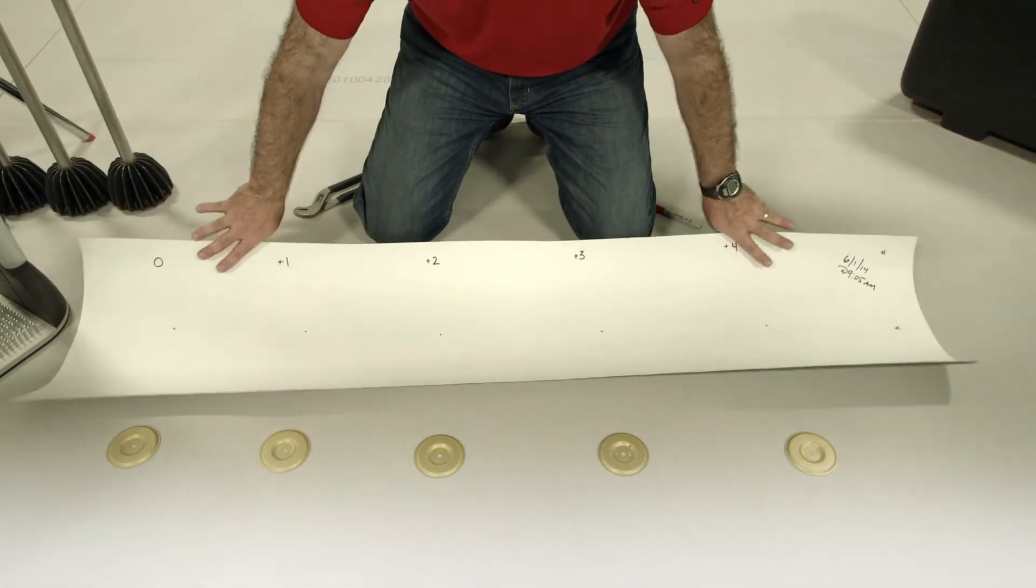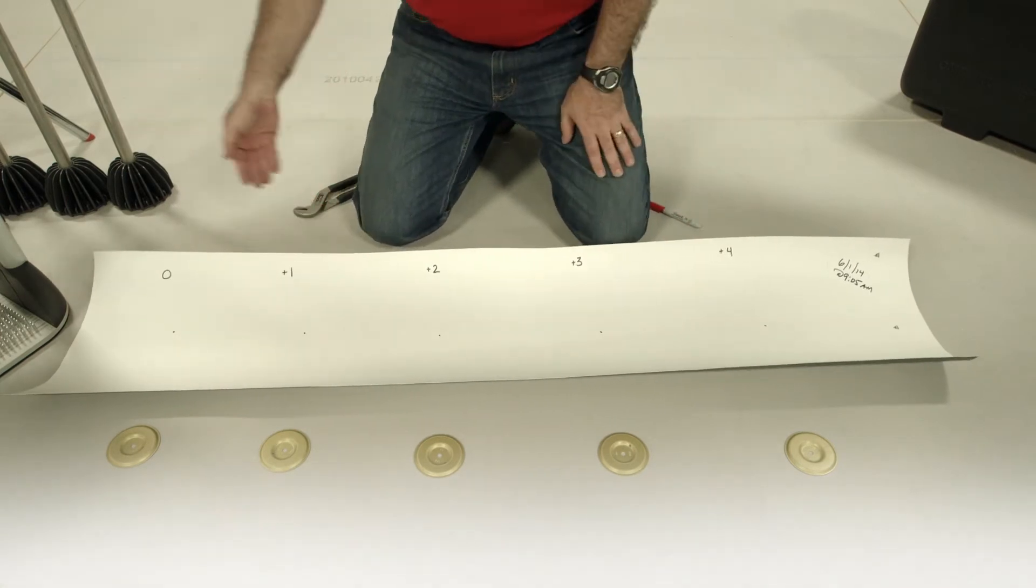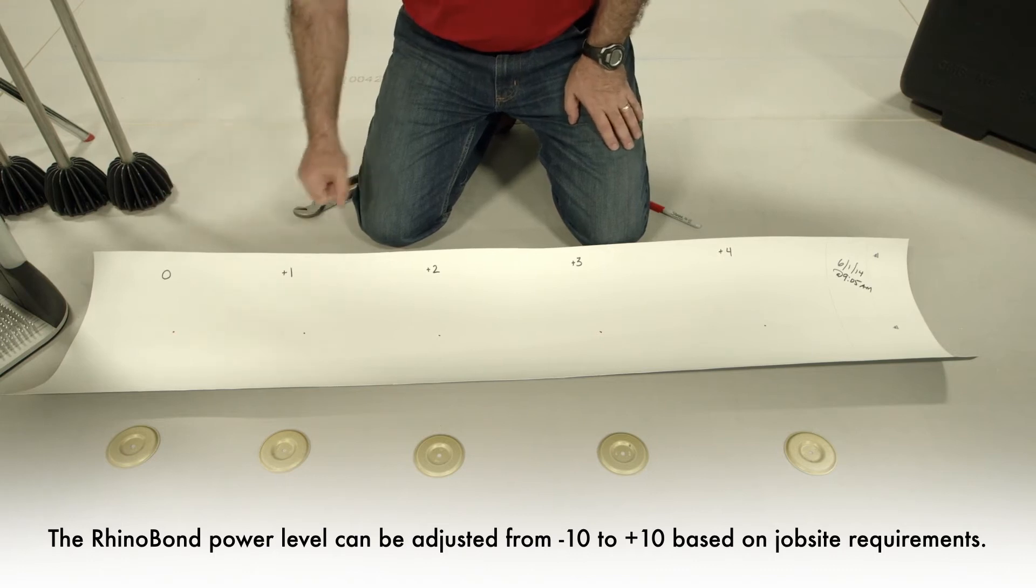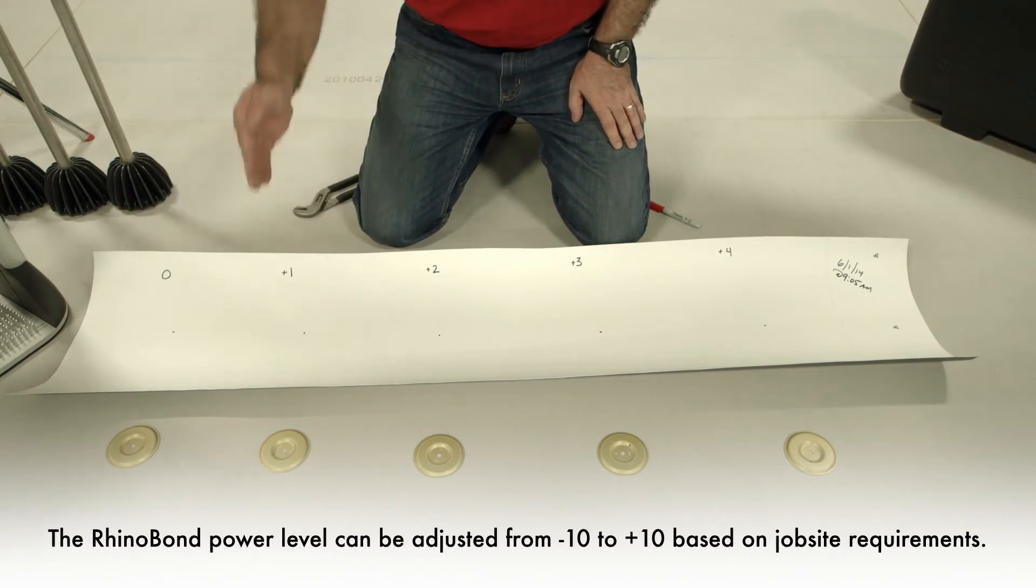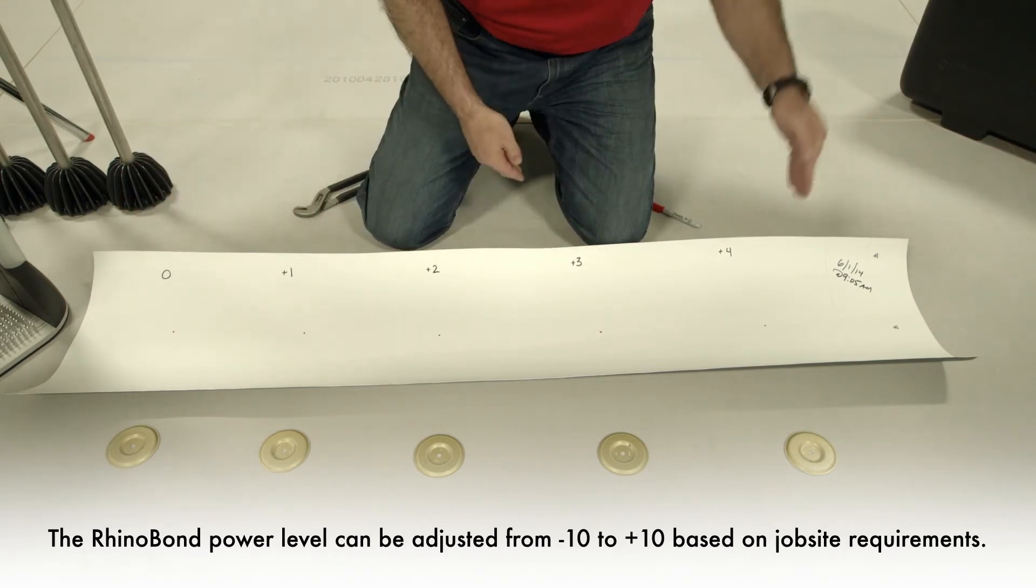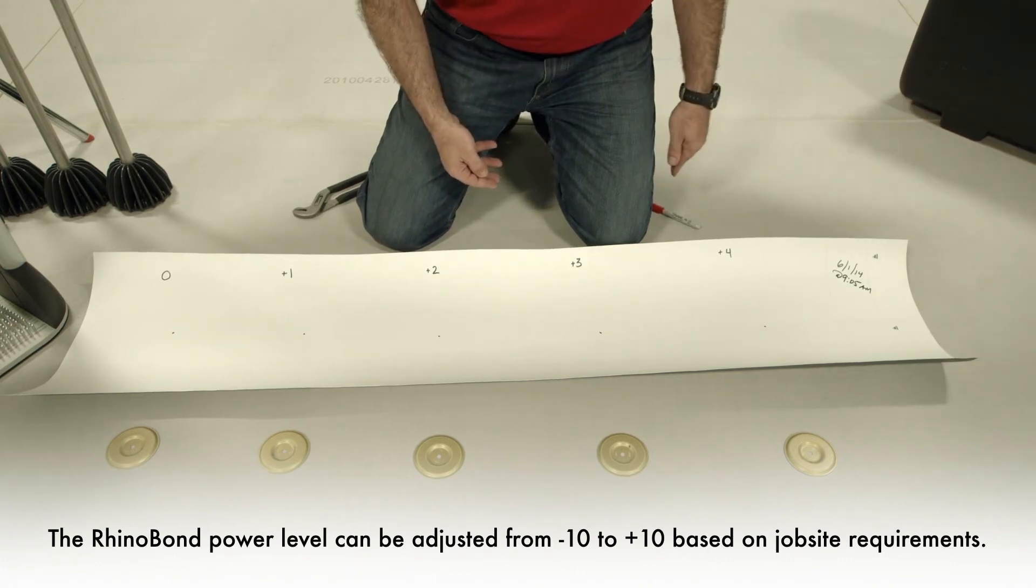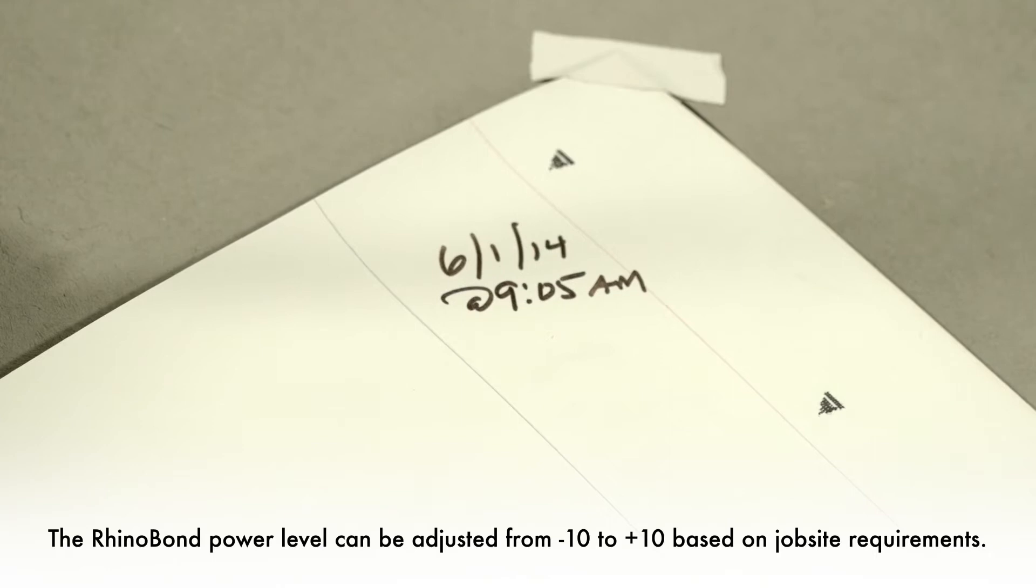Then we're going to set our piece of membrane up for the actual calibration. We're going to select energy settings 0 through plus 4. So about 9 to 12 inches apart, mark a 0, a plus 1, a plus 2, a plus 3, and a plus 4. It's a good idea to time, date, and stamp your membrane swatch so that you have proof of proper calibration.